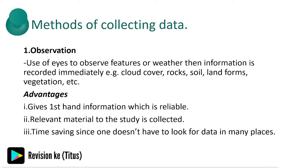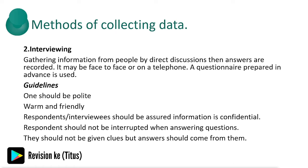Methods of collecting data: first, we have observation, which is basically the use of eyes to observe features or weather. Information is recorded immediately. The advantages are it gives first-hand reliable information, only relevant material to the study is collected, and it's time-saving since one doesn't have to look for data in many places. Disadvantages include that data on past activities isn't available, it may be hindered by weather conditions, it's ineffective for people with visual disabilities, and it's tiresome and expensive as physical presence requires a lot of traveling.